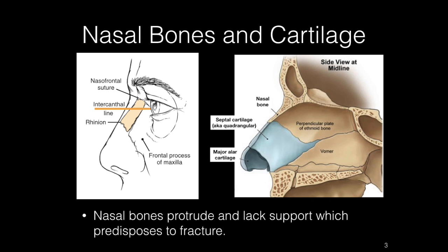The prominence and delicate structure of the nose make it vulnerable to a broad spectrum of injury, which accounts for why it is the most frequently fractured facial bone. The bony vault is a pyramid-shaped structure composed of paired nasal bones centrally and the frontal process of the maxilla laterally. Superiorly, the thickness of the nasal bones is greater above the level of the intercanthal line as they taper upward toward the nasal frontal suture. Below the intercanthal line, the thinner nasal bone projects anteriorly to join with the upper lateral cartilages at a midline point known as the rhinion.